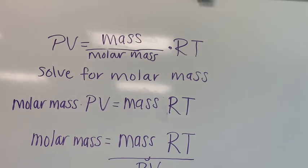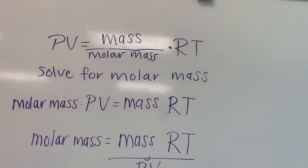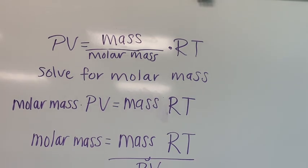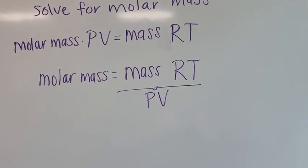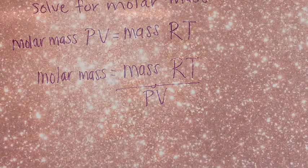The goal of your experiment today is to calculate the molar mass of a vapor and then identify it. There's an in-between step to solve for molar mass: molar mass times PV equals mass times RT. Then isolating molar mass — this is just algebra — we have molar mass equals mass times RT divided by PV.